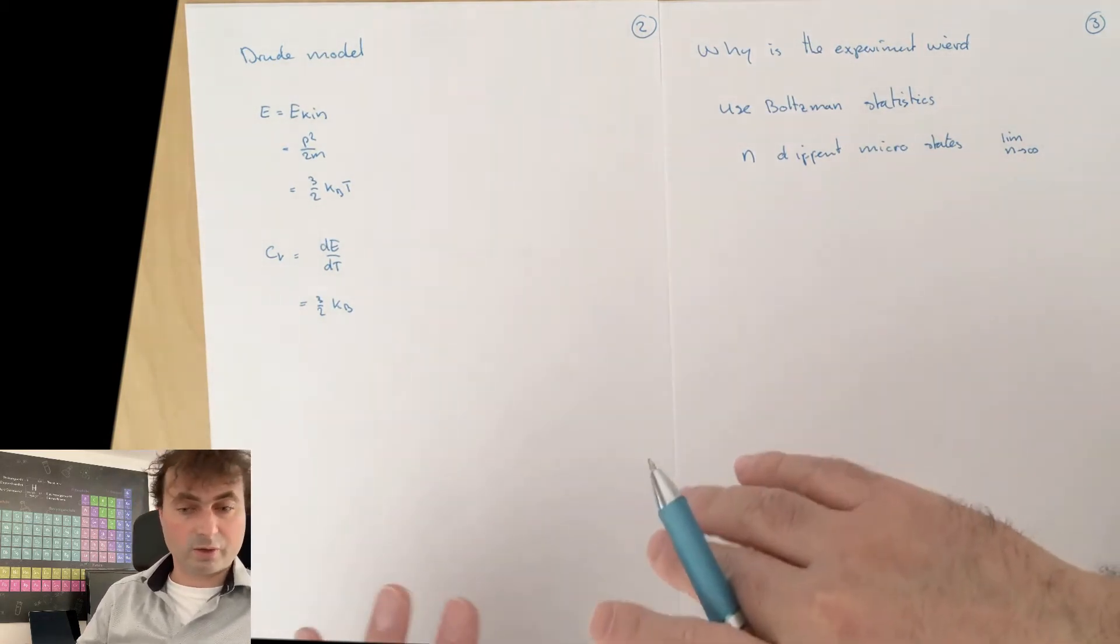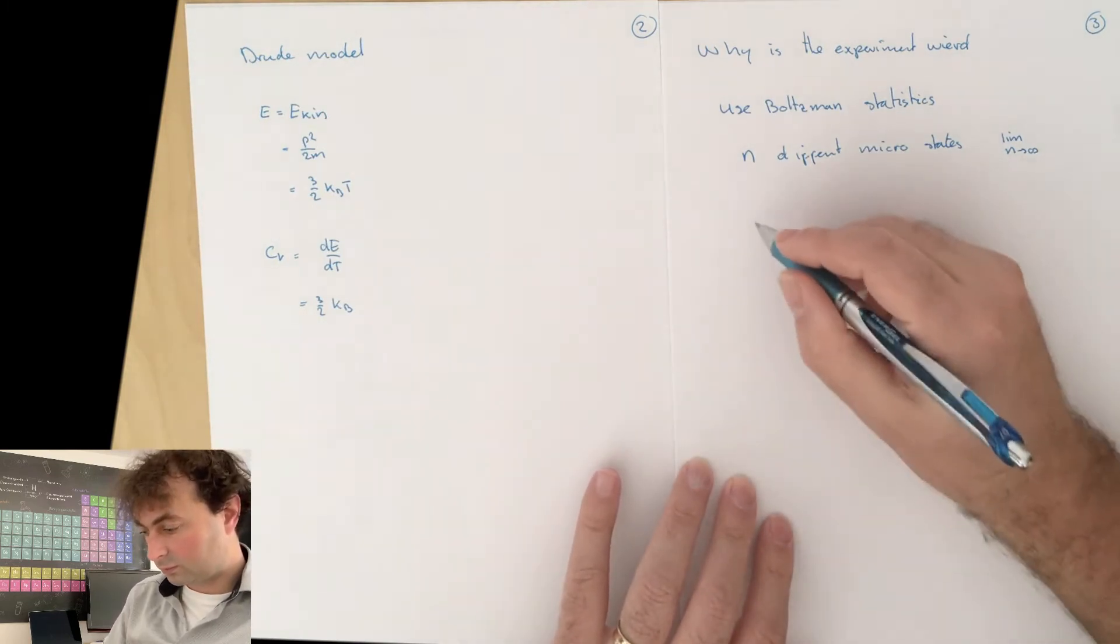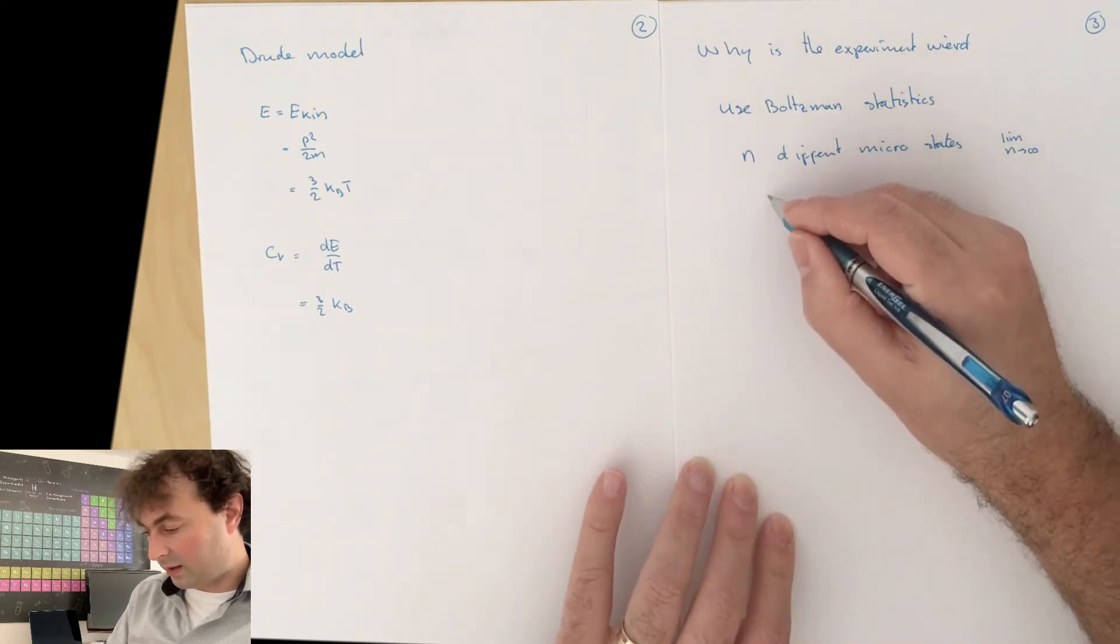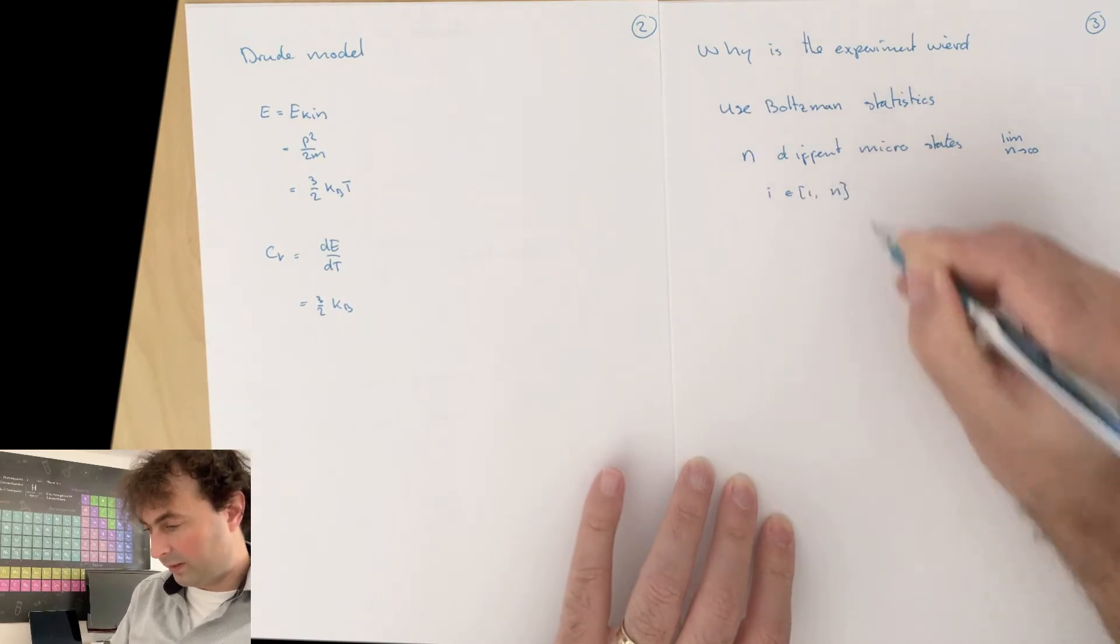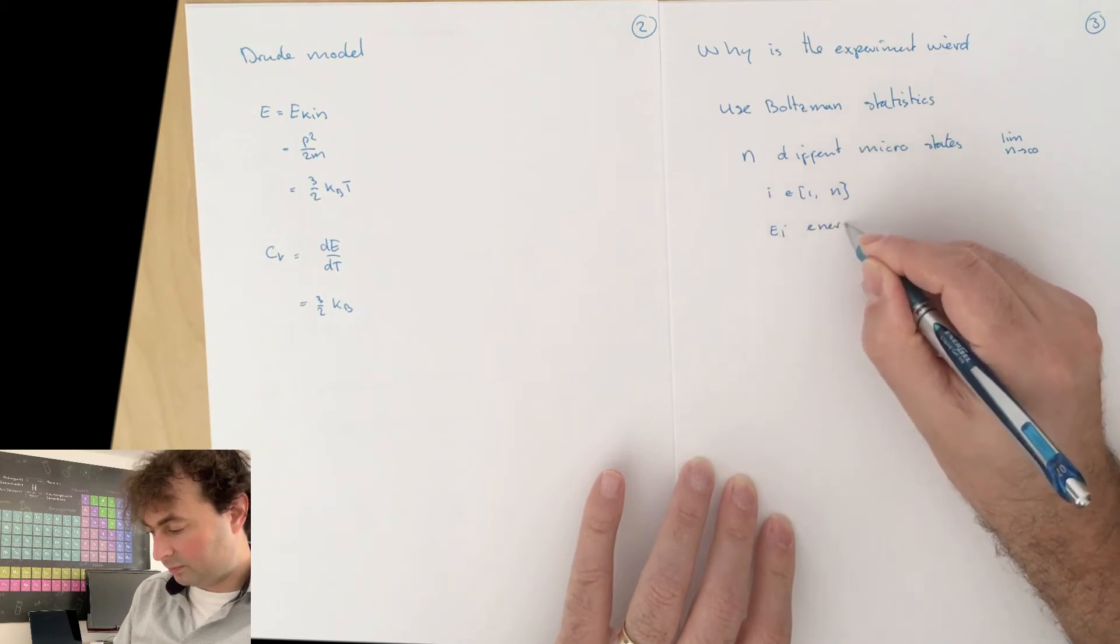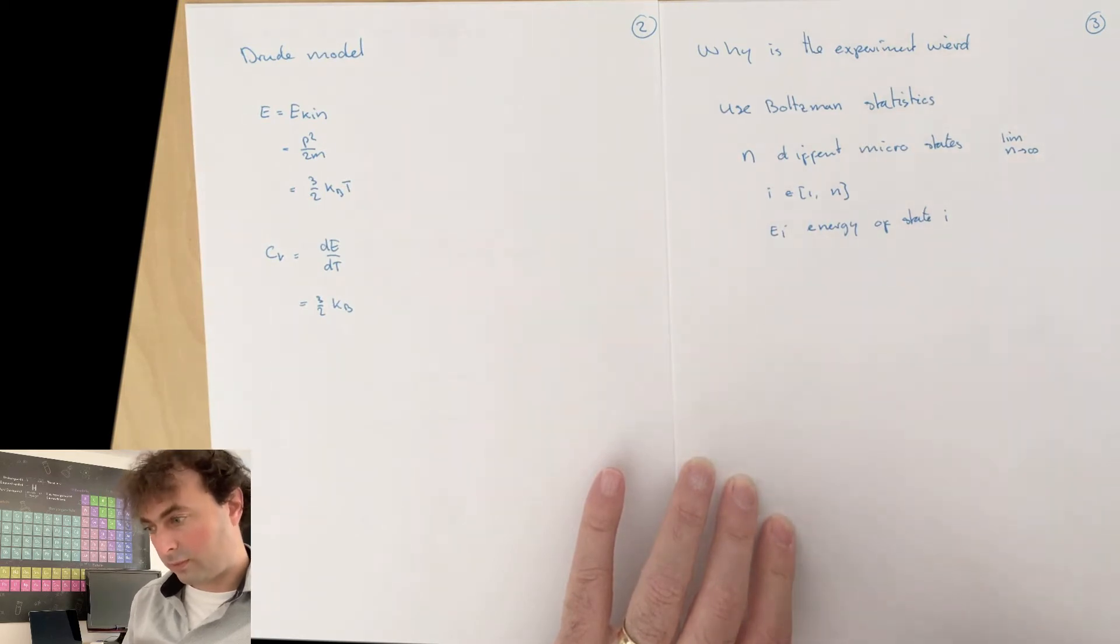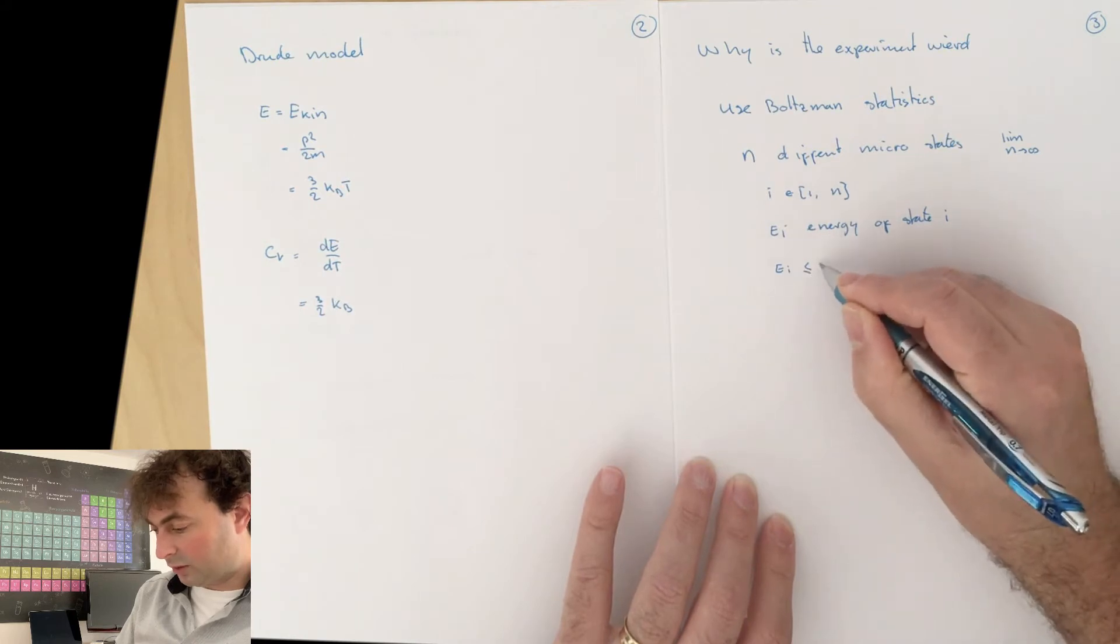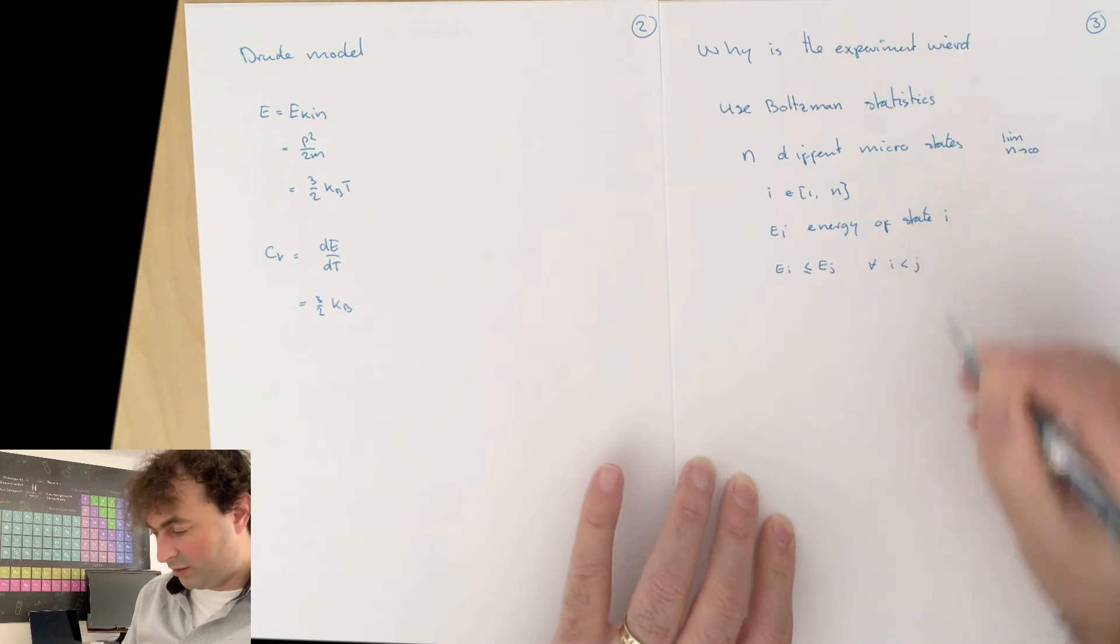But when it's quantized, we can nicely write out sums. But we have, in the end, to take the limit to infinite. So I have N states and I label them with I going from 1 to N. And EI is the energy of state I.